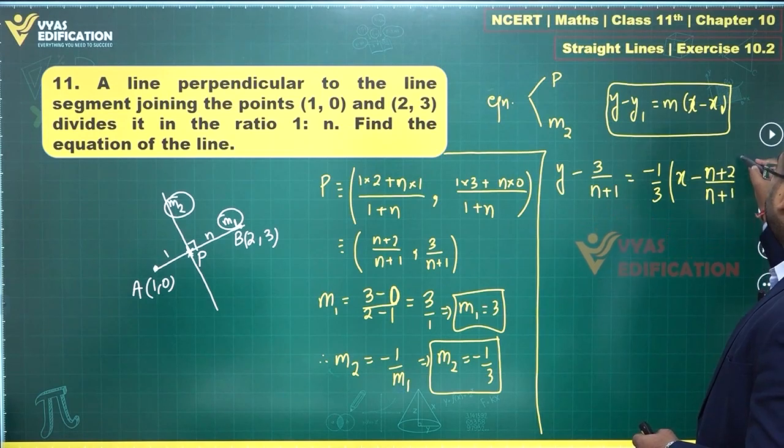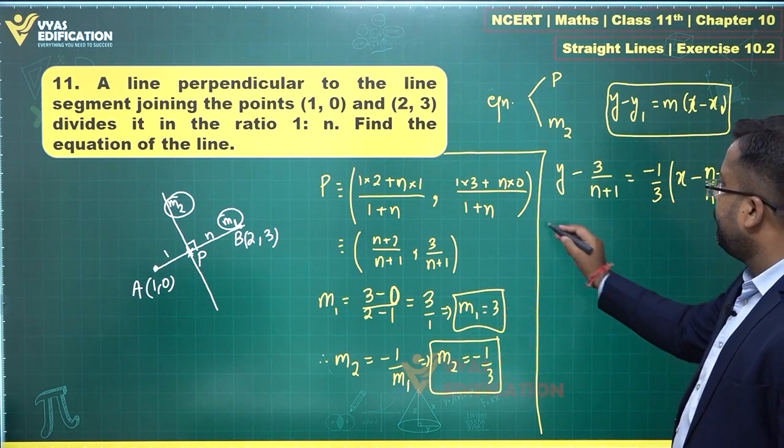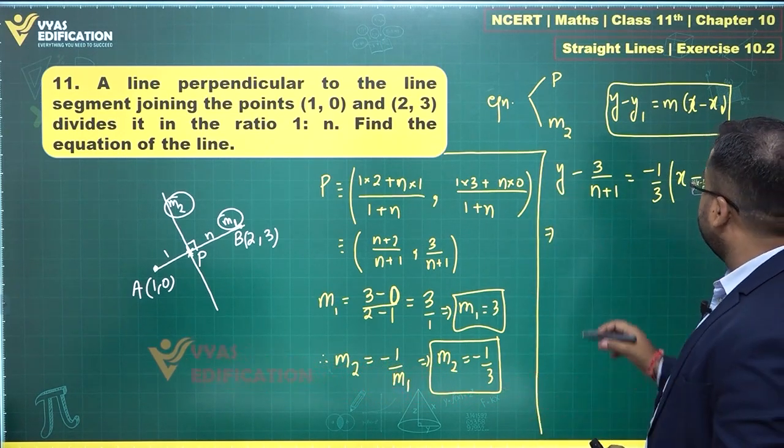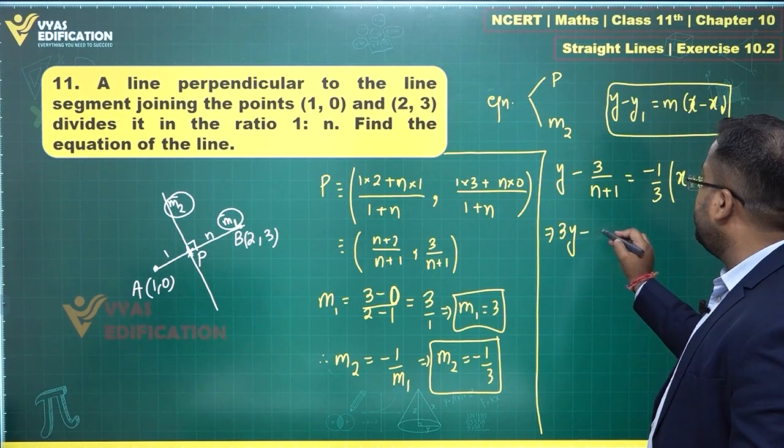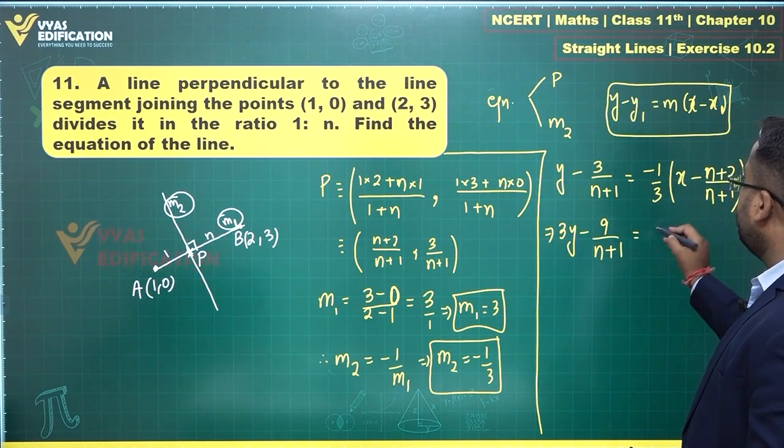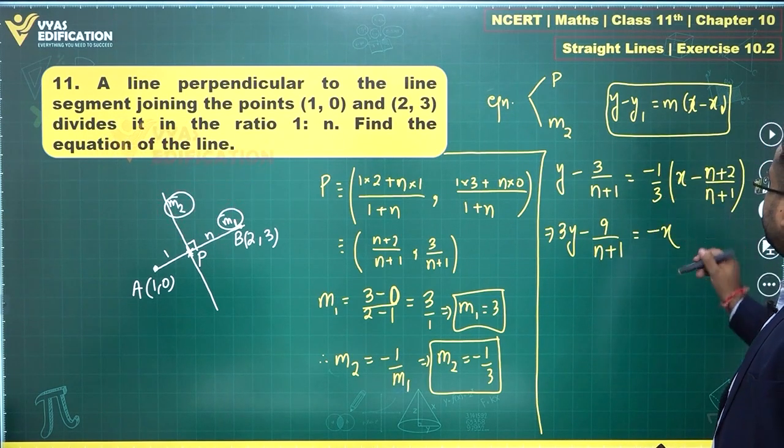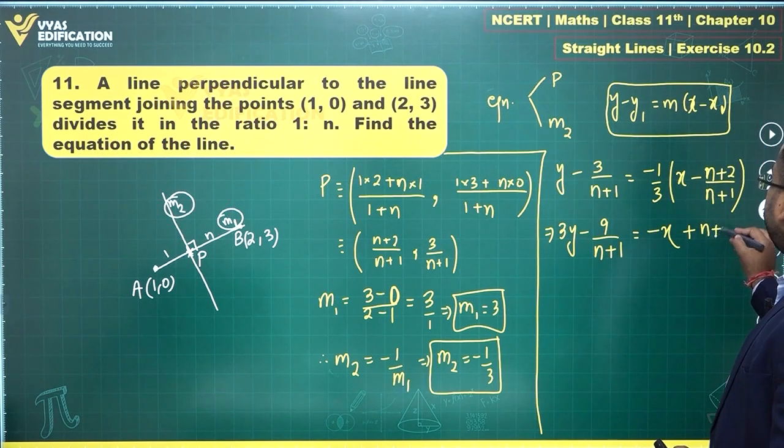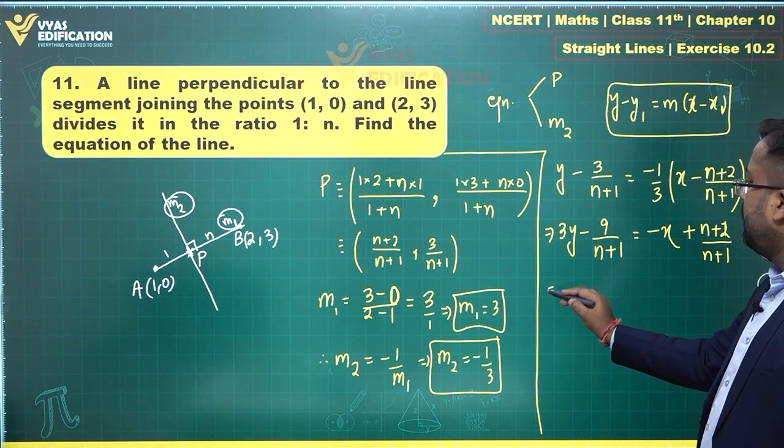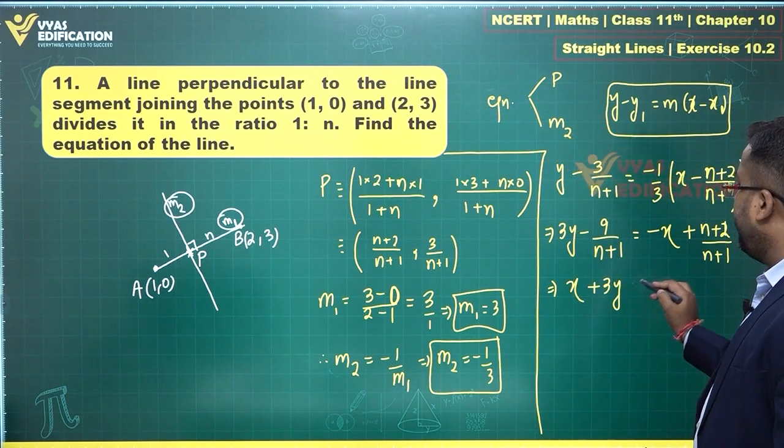Let's not be confused between n and x. Let's multiply by 3. This becomes 3y minus 9/(n+1) is equal to minus x, this is x minus and minus becomes plus n plus 2/(n+1). Let's bring this x on this side. This is x plus 3y is equal to...